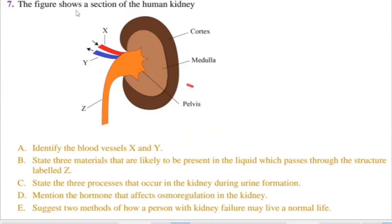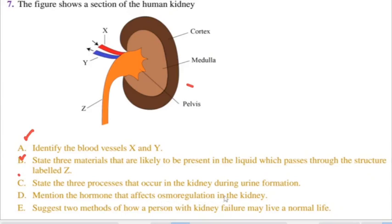So the question reads: the figure shows a section of the human kidney. This is the figure that is labeled X, Y, and Z. Question A: identify the blood vessels X and Y. Question B: state three materials that are likely to be present in the liquid which passes through the structure labeled Z. Question C: state the three processes that occur in the kidney during urine formation. Question D: mention the hormone that affects osmoregulation in the kidney. Question E: suggest two methods of how a person with kidney failure may live a normal life.